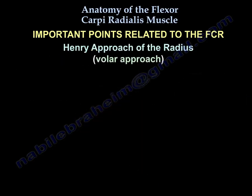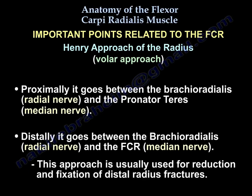The Henry approach is a volar approach to the radius. Proximally it goes between the brachioradialis, innervated by the radial nerve, and the pronator teres, innervated by the median nerve. Distally it goes between the brachioradialis, innervated by the radial nerve, and the flexor carpi radialis, innervated by the median nerve. This approach to the distal radius is typically used for reduction and fixation of distal radius fractures.